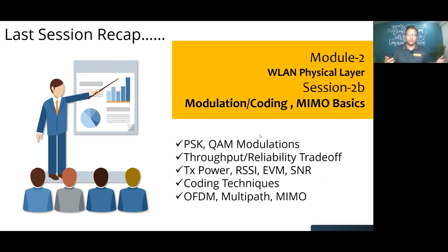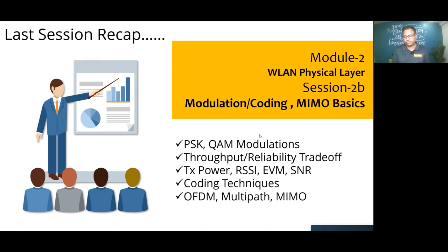We also talked about RSSI — Received Signal Strength Indicator — the received power at the receiver measured in dBm. For a wireless LAN receiver, around minus 20 to minus 30 dBm is considered very good signal; all the way down to minus 80 or minus 90 dBm is very poor signal where you may actually drop connectivity.